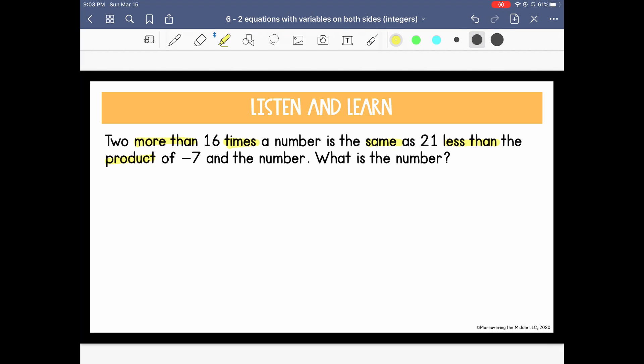2 more than 16 times a number is the same as 21 less than the product of negative 7 and the number. What is the number? So we are looking for this number that they're describing. If we can choose any variable, I'm going to choose n for a number.